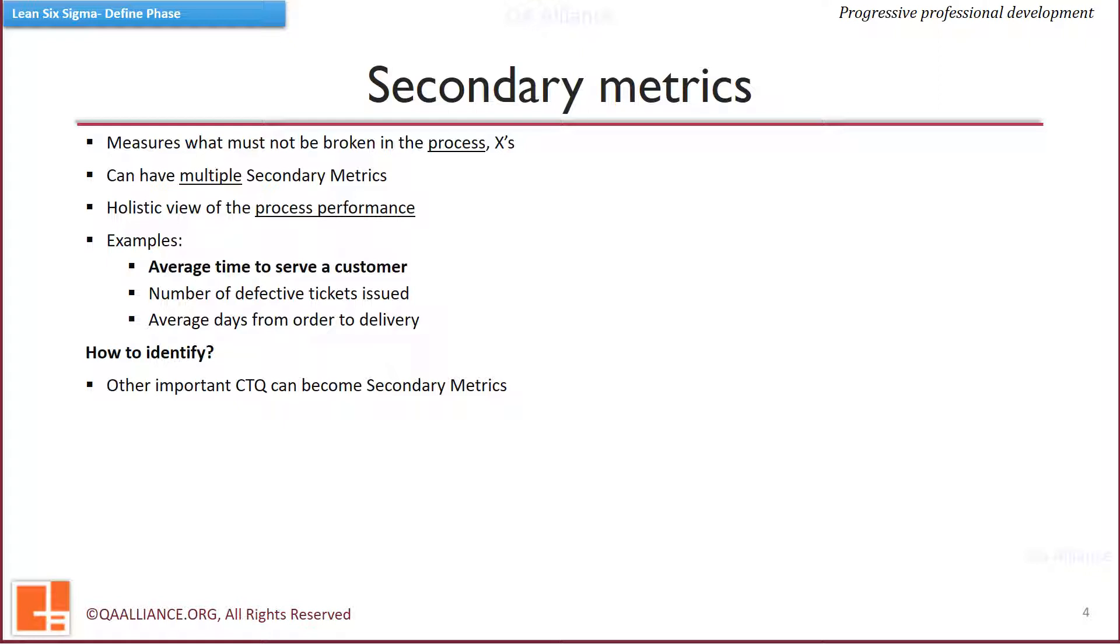First method is to select these from identified critical to quality measures. The most important critical to quality measure usually becomes the primary metric. The other critical to quality measures are good candidates for secondary metrics. This is because since they are critical, their value needs to be controlled. Hence the top few metrics which determine the quality of output should be made secondary metrics.